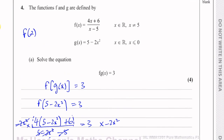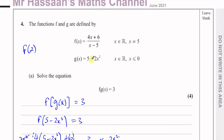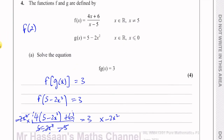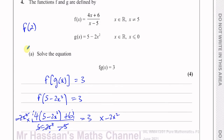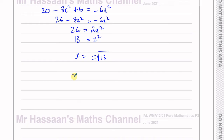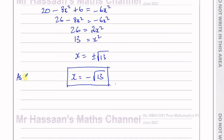This is where these domain details are really important. The function g(x) is only defined for values of x which are less than or equal to 0. Therefore, the positive root √13 cannot be a solution, since g(x) does not exist for positive values of x. So the only solution is x = −√13.